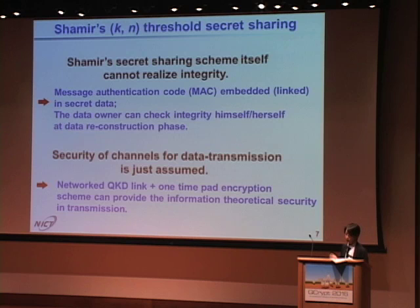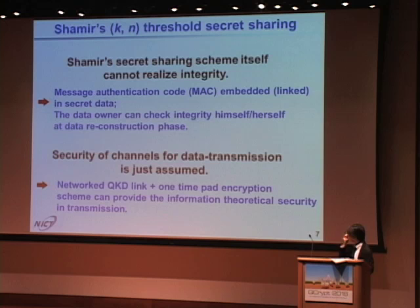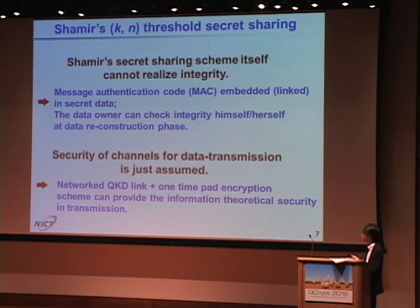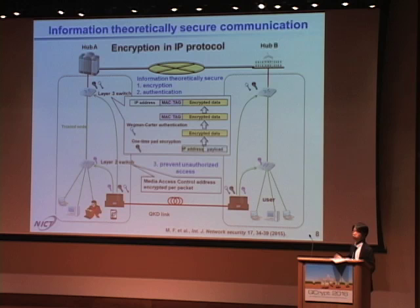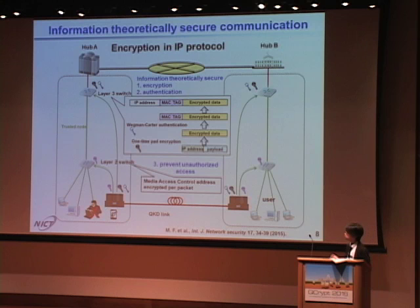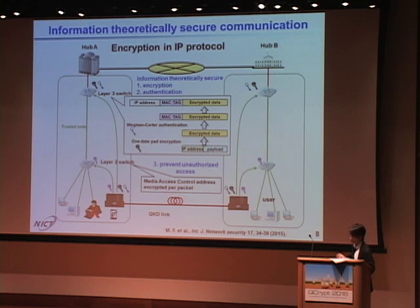Shamir's secret sharing scheme itself cannot realize integrity. However, if a message authentication code is embedded in the secret data, the data owner can check the integrity at the data reconstruction phase. The security of channels for data transmission is assumed, so networked QKD links and one-time pad encryption can provide information theoretical security in transmission. NICT has developed security-enhanced layer 3 switches in which one-time pad encryption and message authentication are executed.